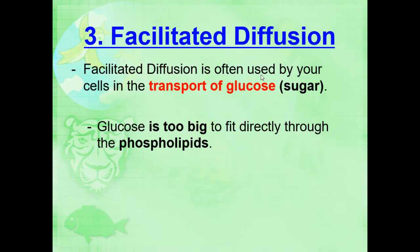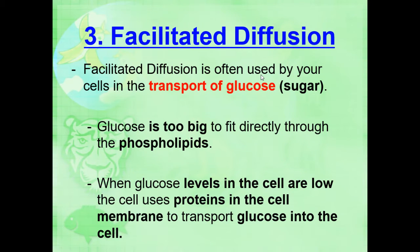Glucose is way too big to fit directly through the phospholipids. So when glucose levels in the cell are low, the cell is going to use proteins in the cell membrane to transport the glucose into the cell.